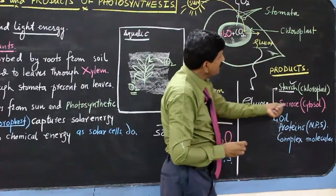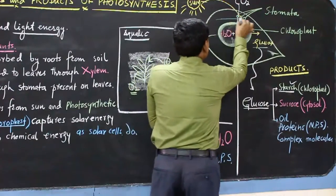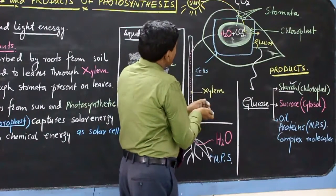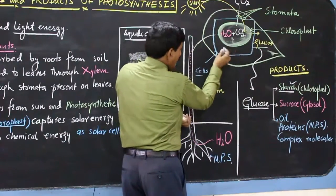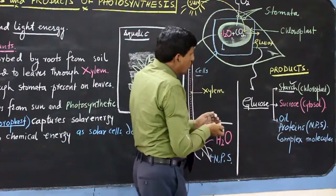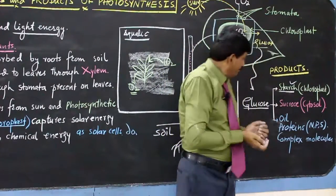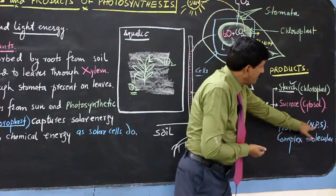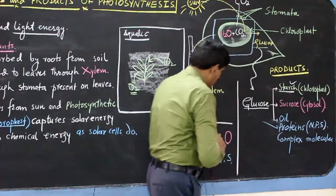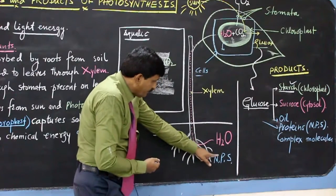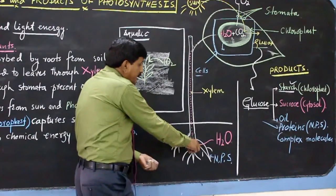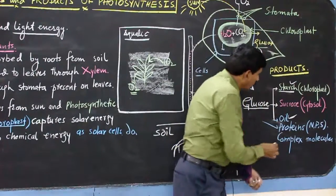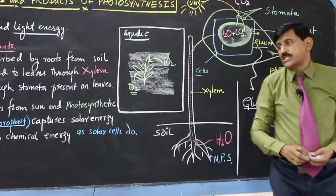Then, glucose ke kuch molecules agar cytosol mein hain — cytosol yeh, yeh cell hai, organelle ke bahar fluid — this is the cytosol — agar yeh glucose cytosol mein aa raha hai yahan par, to glucose yahan par banega sucrose. Then, other glucose ke molecules, in the presence of nitrogen, phosphorus, and sulphate, they will form proteins. Yeh plant nitrogen, phosphorus, and sulphate absorb karega from the soil through the roots. Glucose ke kuch molecules se oils bhi banenge, aur kuch other complex organic molecules bhi banenge.